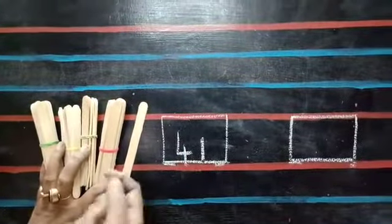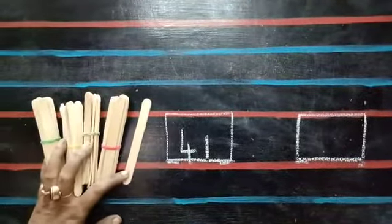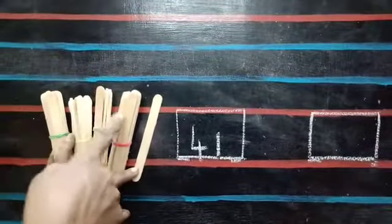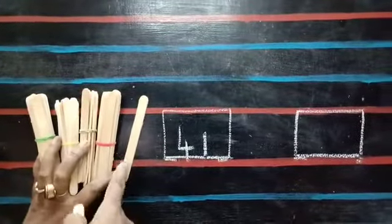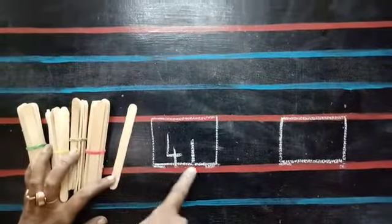Children, 10, 20, 30, 40. 40 and 1 stick extra makes 41.